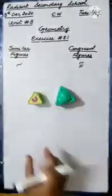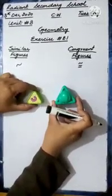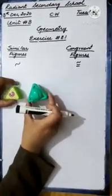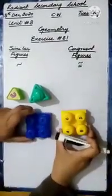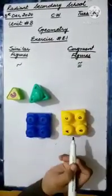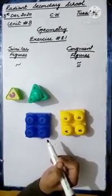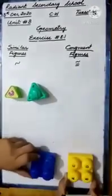For example, here are two triangles — one is bigger and one is smaller. They have the same shape but different sizes, so these are similar figures. But if we consider two shapes where both size and shape are exactly the same, then we say they are congruent figures. Let's take another example.